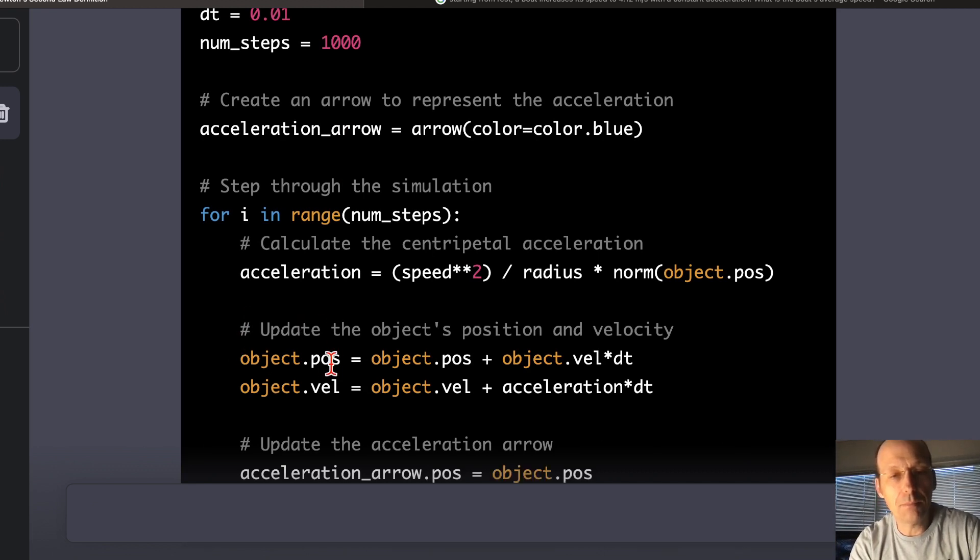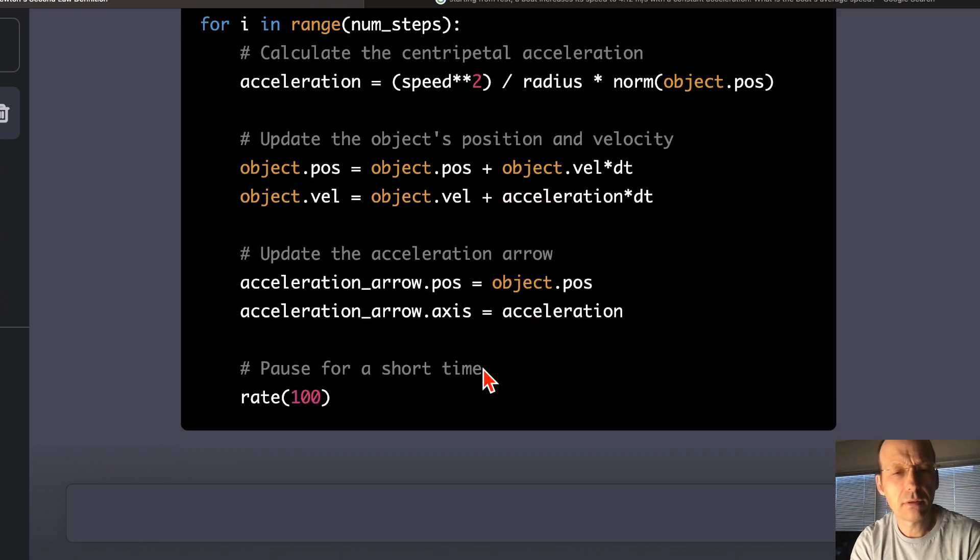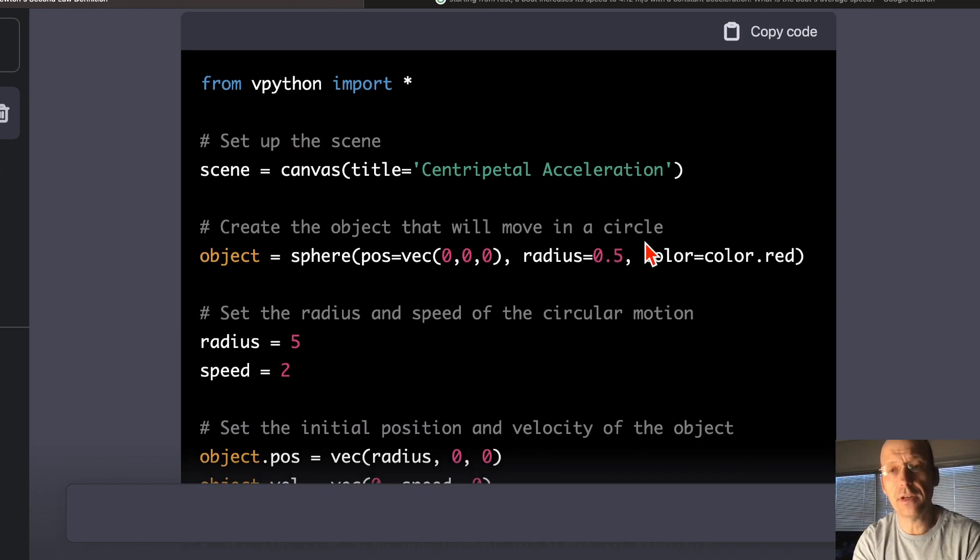Okay. Update the position. Okay. Velocity. So, this is not going to work. Oh, no, they did. Look. So, velocity squared over r times r hat. So, this should be negative. It should be a negative sign right there. Update the arrow. Okay. Let's see. Let's copy it. Let's find out. You want to try? Copy that.